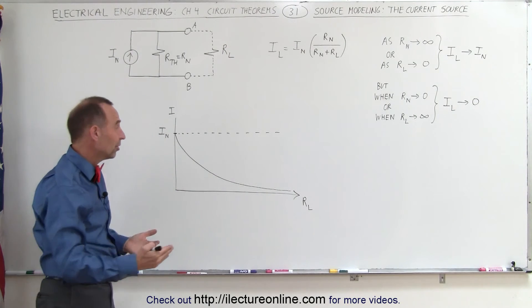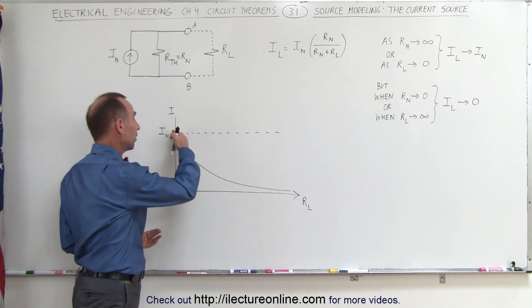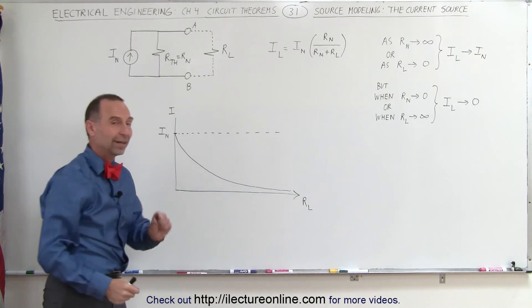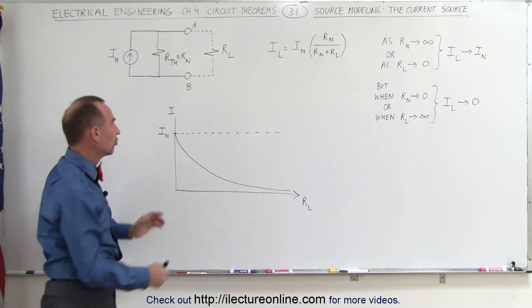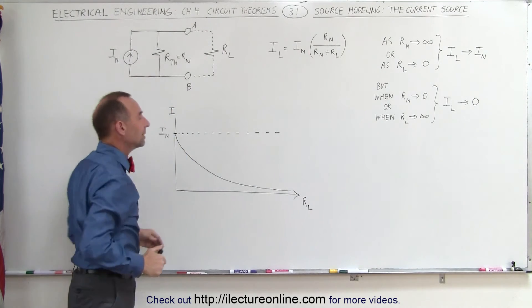However, in a real situation, you can see that the current tends to drop off as the load resistor gets larger, and it gets a smaller and smaller percentage of the current delivered by the source.